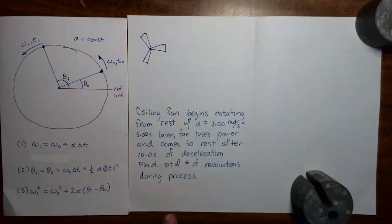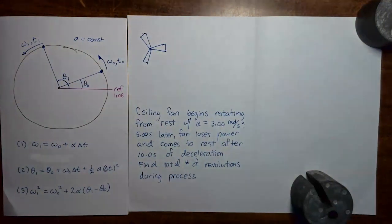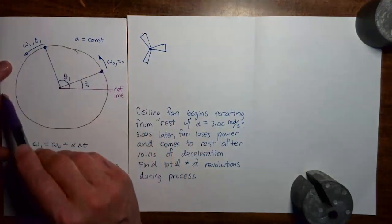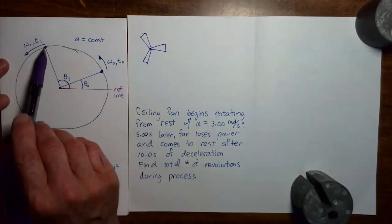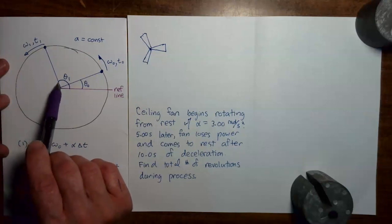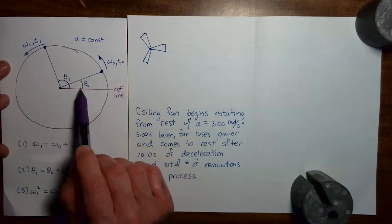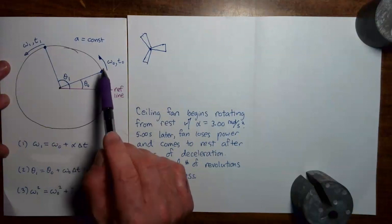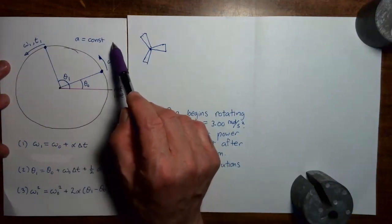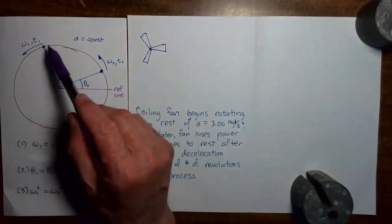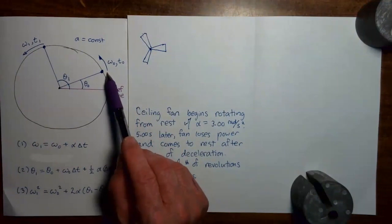In the previous video, I introduced you to a set of equations that we can use to describe the motion of an object which is either moving in a circle at a constant angular acceleration or rotating at a constant angular acceleration. This set of equations relates the rotational kinematic variables at a later time to the rotational kinematic variables at an earlier time.